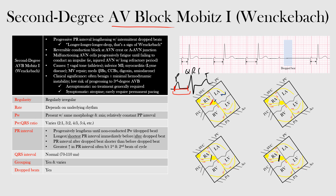In the first beat, the conduction system is normal — we start at the sinus node and conduct through the AV node to the ventricles. AV conduction is normal, so we have a normal PR interval duration. Normal PR interval is between 120 and 200 milliseconds, which is three to five small boxes.